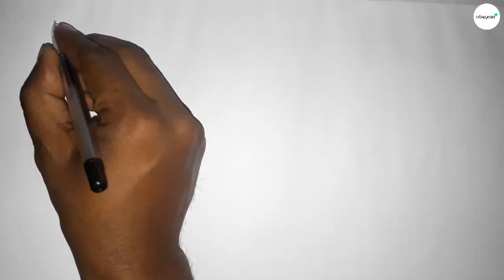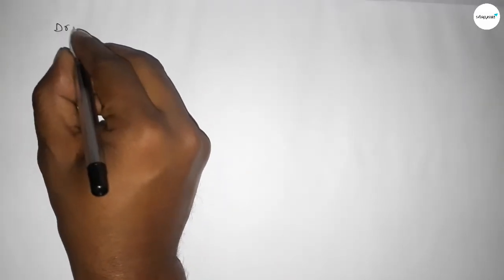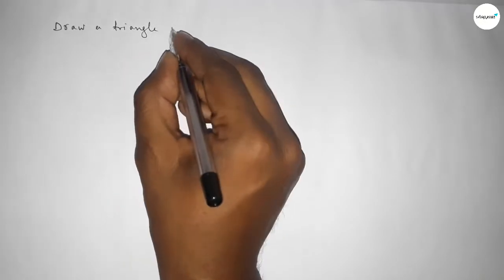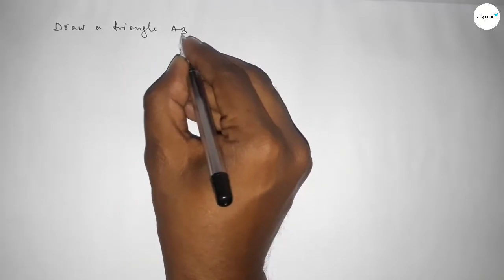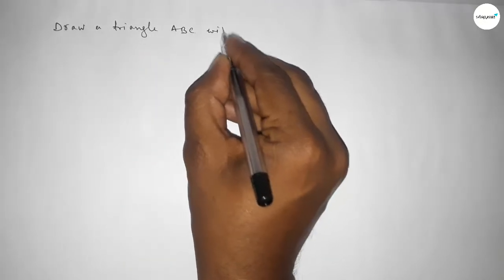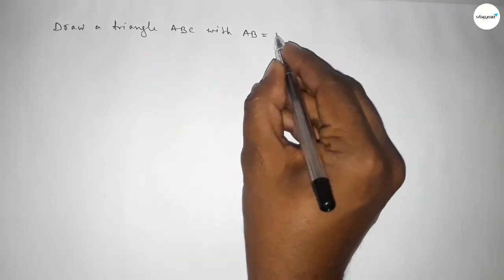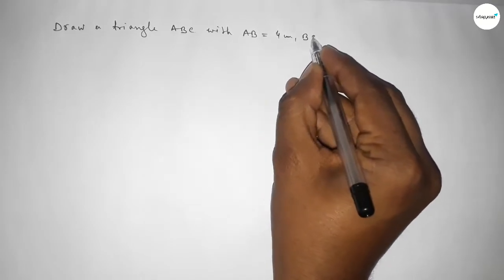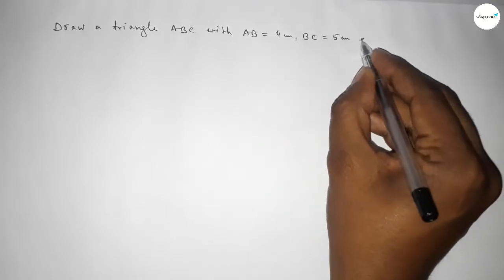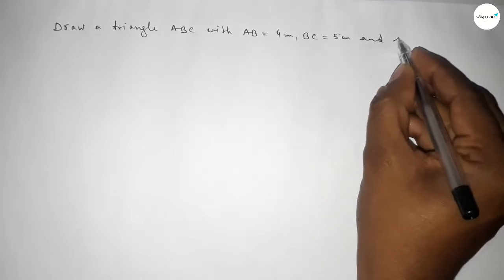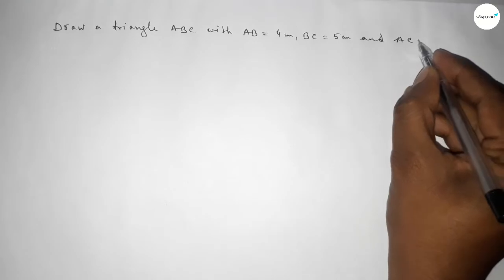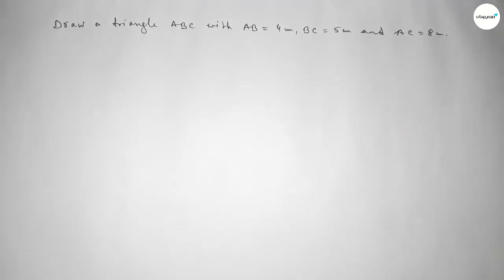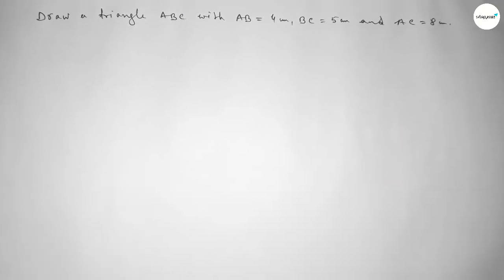Hi everyone, welcome to SI Share Classes. Today in this video we have to draw a triangle ABC with AB equal to 4 centimeters, BC equal to 5 centimeters, and AC equal to 8 centimeters. So let's start the video.